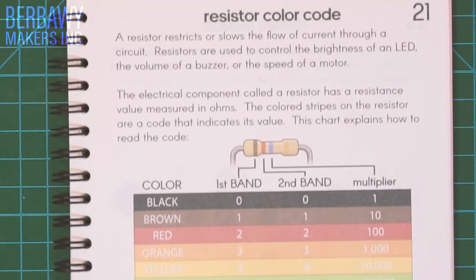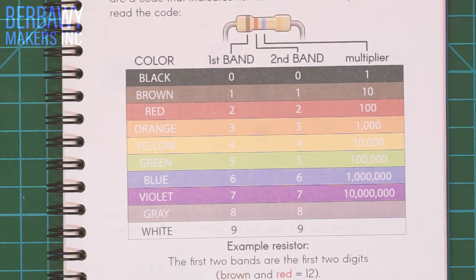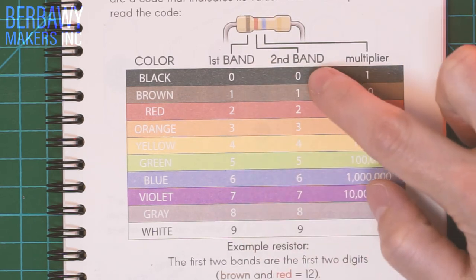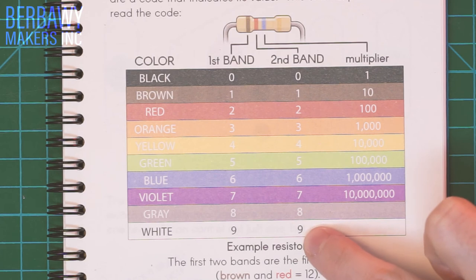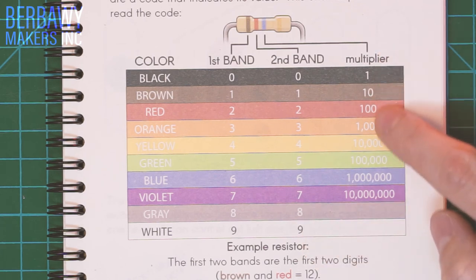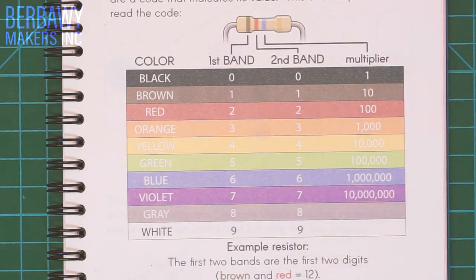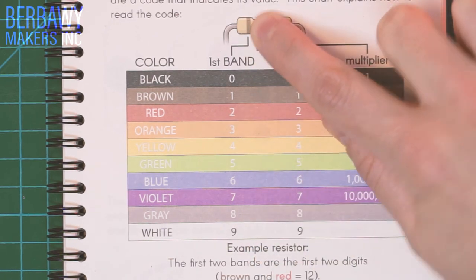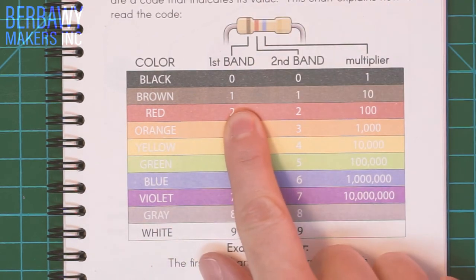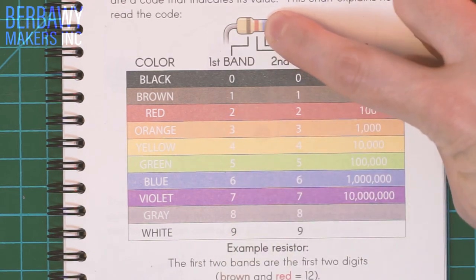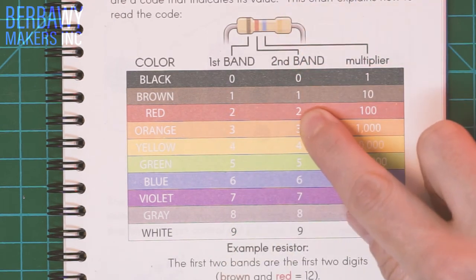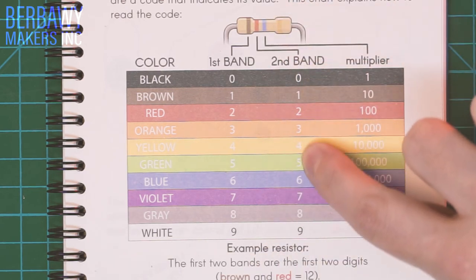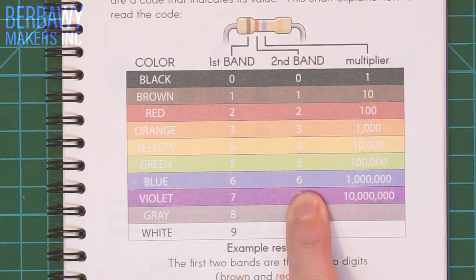Page 21 of your notebook is where the resistor color code chart is located. The first band stands for the tens place of your number, the second band stands for the ones place of your number, and the third band is your multiplier, which is a power of 10. So let's see how this example works. Our first band is brown, so that means your tens place is a one. The second band is red, so your ones place is a two, so that's a 12. Your third band is blue, so we're multiplying it by 10 to the sixth, or one million.